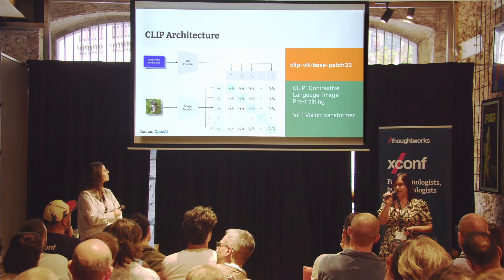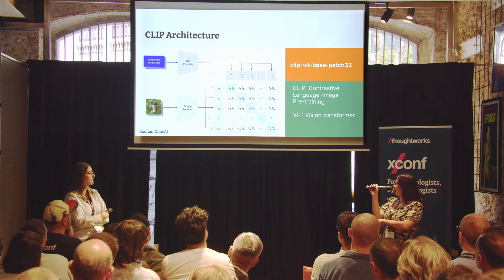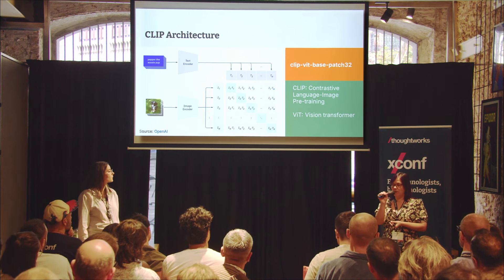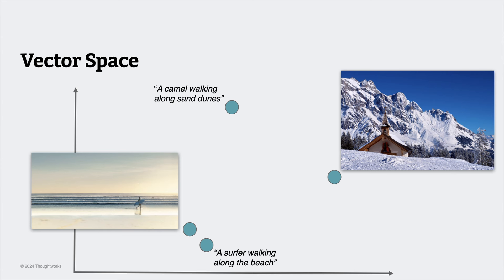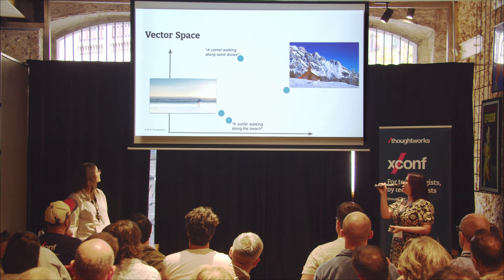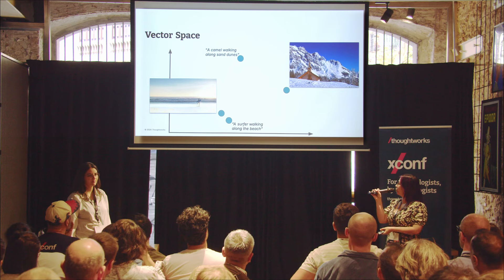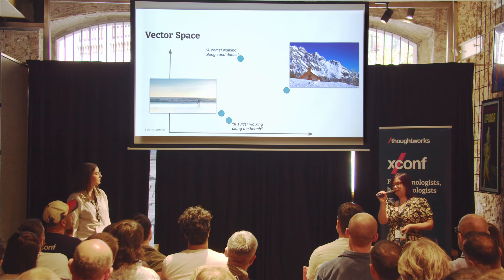Then comes the CLIP part — contrastive language-image pre-training. When the model is being trained, the goal is to maximize the vector similarity between matched text and image pairs, like the image of the Aussie pup and its text, while also minimizing the similarity between mismatched pairs. Here's an example visualizing the vector space using our landscapes dataset: an image of a surfer walking along a beach and the text 'surfer walking along a beach' are close together in the multimodal vector space, and should be further from an image of a mountain or text about a camel on sand dunes.